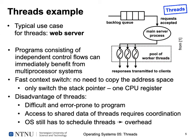Programs that consist of independent control flows, like a web server serving pictures and HTML pages, can immediately benefit from multi-processor systems by assigning each worker thread to its own CPU. When a thread is already running in the background, there's no expensive CPU scheduling needed — we just activate it. Context switching between threads is fast because there's no need to copy the address space; we only switch CPU registers and especially the stack pointer.